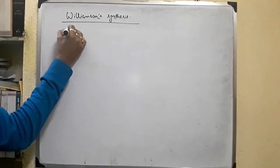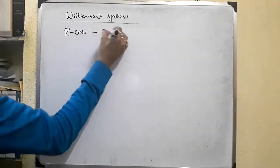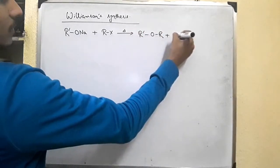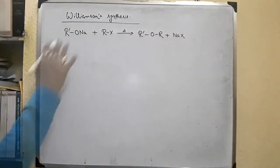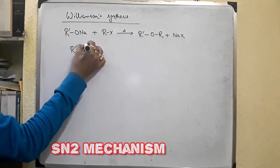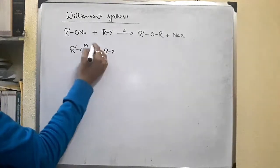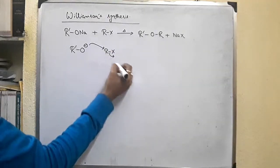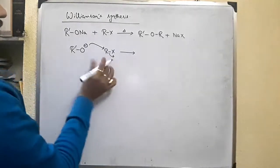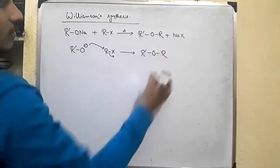Taking sodium alkoxide plus the alkyl halide with heat, the byproduct is sodium halide. The reaction follows an SN2 mechanism, where the alkoxide ion is the nucleophile which attacks the alkyl group and the leaving group leaves taking the negative charge with it. This is a one-step process and finally we get the ether.